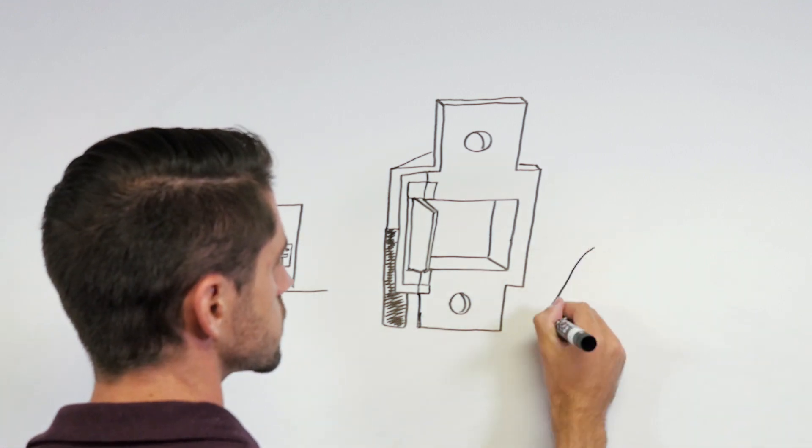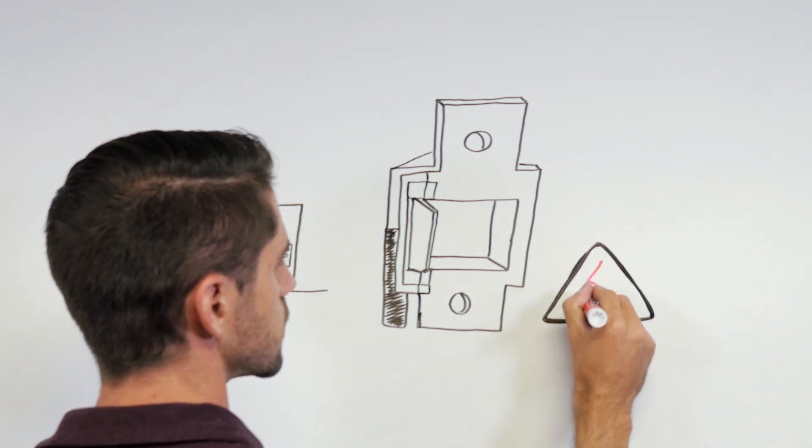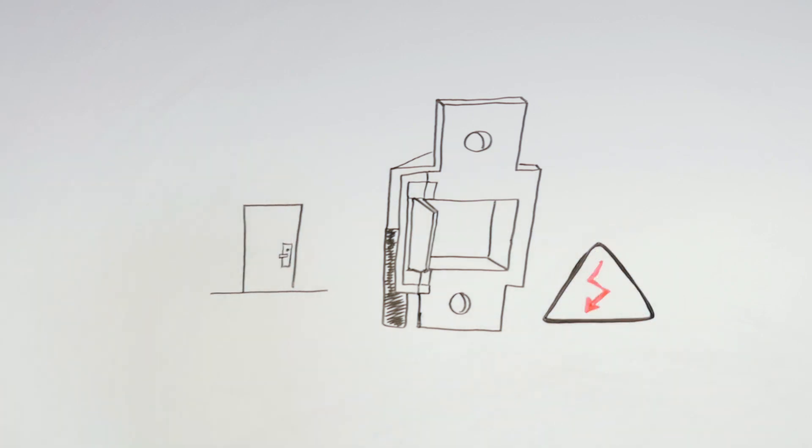A fail secure electric strike is commonly used for basic access control situations. When power is removed, the lip of the electric strike is locked and therefore the door is locked from the key side. When power is applied, the lip of the strike is free to move so the door can be opened.